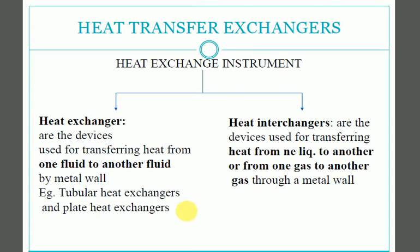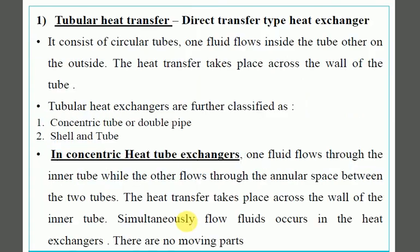Let's see some examples. First is the tubular heat exchanger. We will move directly to the figure so that it is easier to understand. Tubular heat exchangers are classified into concentric tube or double pipe, and shell and tube type.